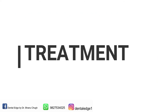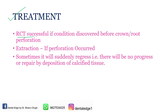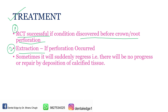Coming to the treatment: RCT (root canal treatment) is a successful treatment if it is discovered before crown or root perforation. So RCT is the first line of treatment. If perforation has already taken place — meaning the resorption is so long-standing that the part has perforated — then extraction is done. Sometimes it will spontaneously regress, or there may be repair by deposition of calcified tissue.